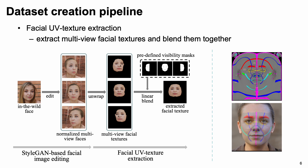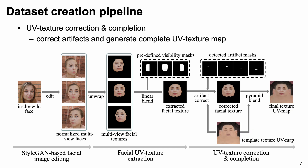Then, we extract facial textures from these multi-view faces and blend them together to obtain a complete texture for the facial region. Specifically, we use a trained deep 3D model to predict the shape and head pose of each view face. Based on this, we unwrap the facial UV texture by projecting the 2D face image onto the 3D face model. Finally, we correct the artifacts and complete the texture map beyond the facial region with the template texture map, obtaining the final normalized texture UV map.